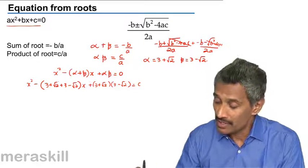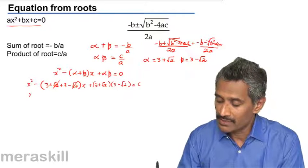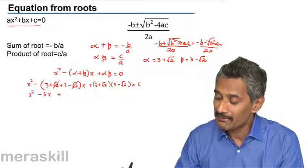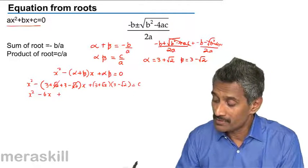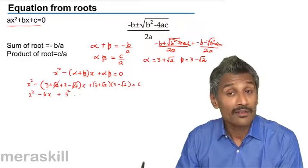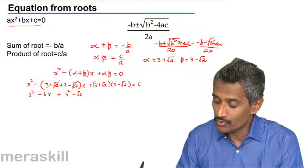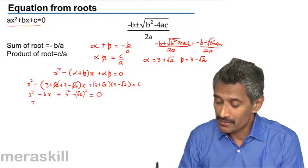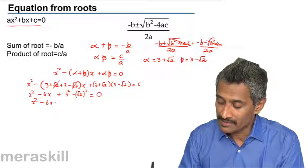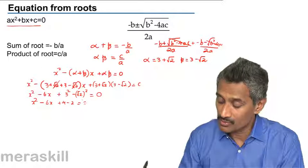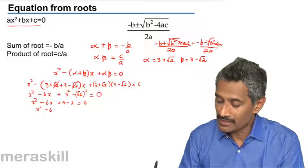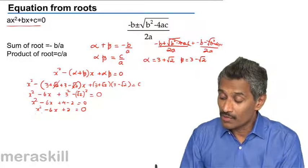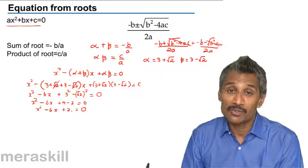The root 2 terms cancel in the sum, giving x squared minus 6x. The product is of the form (a plus b)(a minus b) equals a squared minus b squared, that is 3 squared minus (root 2) squared, which is 9 minus 2. So the equation simplifies to x squared minus 6x plus 7... that is x squared minus 6x plus 2 equals 0. The quadratic equation is x squared minus 6x plus 2 equals 0.